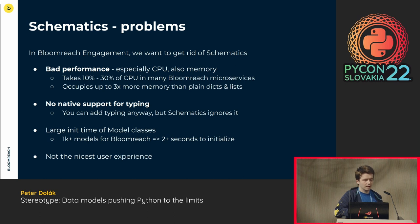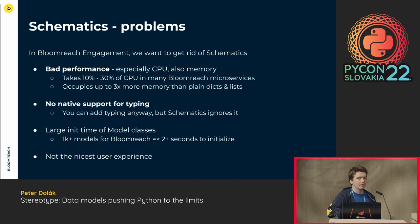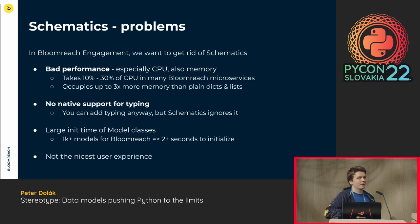So what are our problems with it? First and foremost, it's performance. We recently found out that in Bloomreach's Python services, Schematics is often taking 10 to 30% of CPU cycles — which is horrible. I don't want a third-party library to take up all of that CPU time. It also isn't great for memory — it can take up to three times more memory than if you were just using raw data dicts and lists. There is no native support for typing, so you can add them, but Schematics is not able to benefit from them at all. And if you have a lot of these models — in Bloomreach we have over a thousand Schematics models — importing all of them when a Flask web server is starting up can take two-plus seconds, which is nasty.